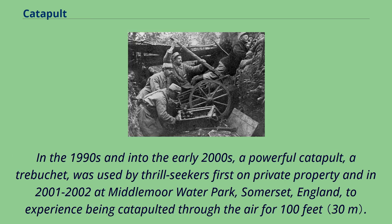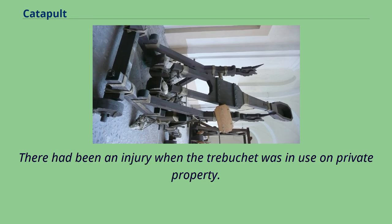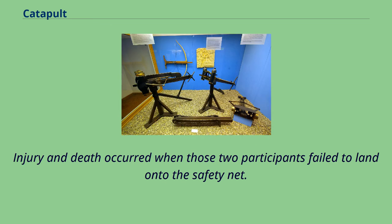In the 1990s and into the early 2000s, a powerful catapult, a trebuchet, was used by thrill-seekers first on private property and in 2001-2002 at Middlemore Water Park, Somerset, England, to experience being catapulted through the air for 100 feet. The practice has been discontinued due to a fatality at the water park. There had been an injury when the trebuchet was in use on private property, and injury and death occurred when two participants failed to land onto the safety net.